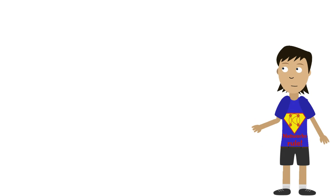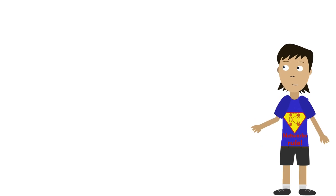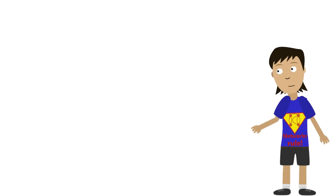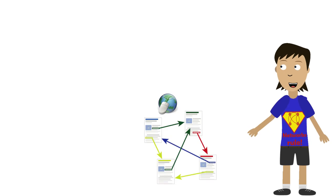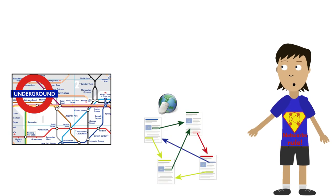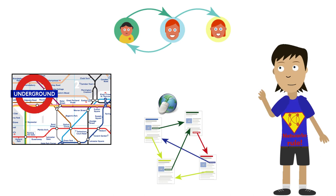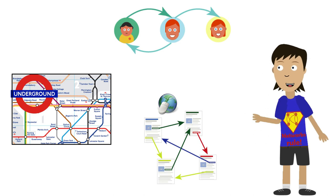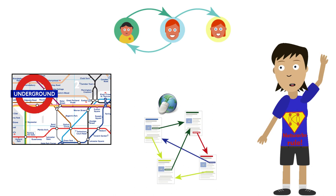Hi, I'm Nettie, the network scientist. I'm important because data on networks is everywhere. Just think about the web, technical infrastructures or social networks. Graphs or networks are the best way to model such systems. I'm a data science superhero.